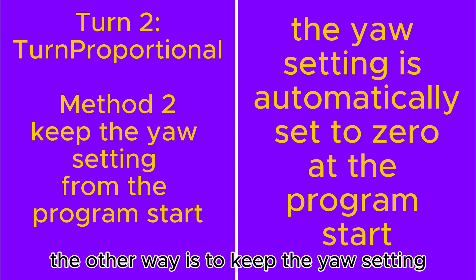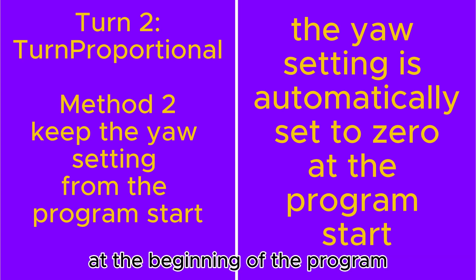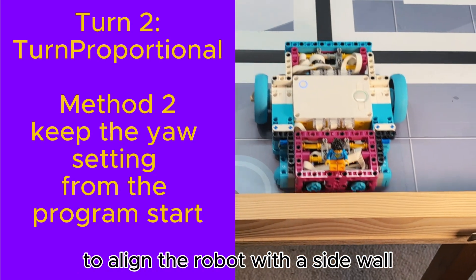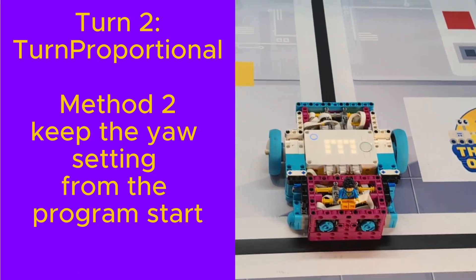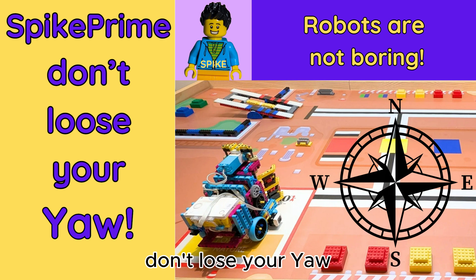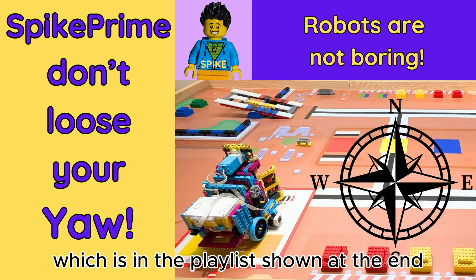The other way is to keep the yaw setting at the beginning of the program and only reset it when it is possible to align the robot with a side wall. This is explained in detail in my video Don't lose your yaw, which is in the playlist shown at the end.